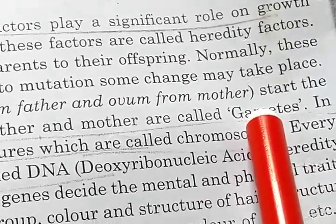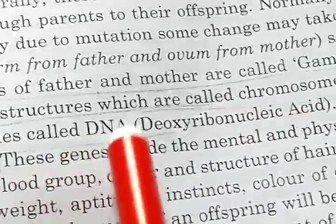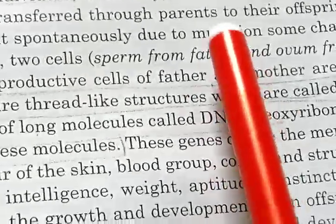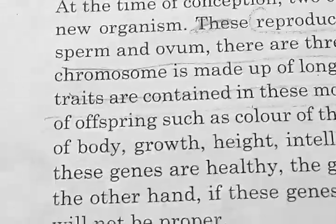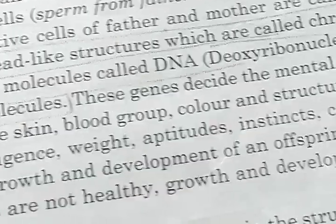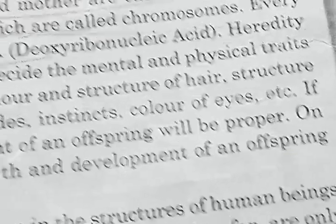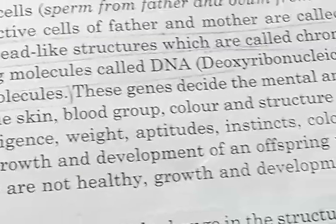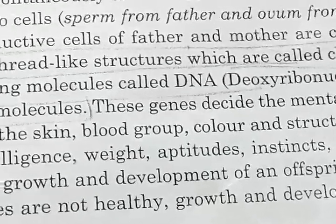Inside the gametes there is a filamentous thread-like structure known as chromosome. It consists of DNA — full form: deoxyribonucleic acid. Hereditary traits are contained in these molecules. These genes decide the mental and physical traits of offspring such as color of the skin, blood group, color and structure of hair, structure of body, growth, height, intelligence, weight, aptitude, instincts, and color of eyes.